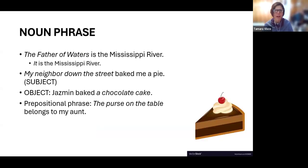First kind of phrase is a noun phrase. These are the simplest kind of phrases. Basically, we are taking words and adding them on to the noun. For example, the father of waters is the Mississippi River. An easy way to spot a noun phrase is the fact that you can replace it with the word it. It is the Mississippi River.